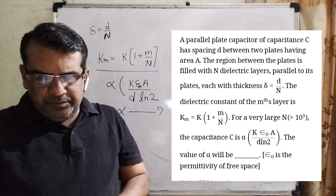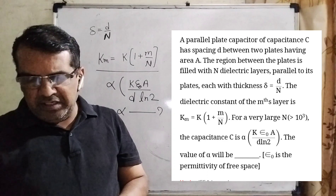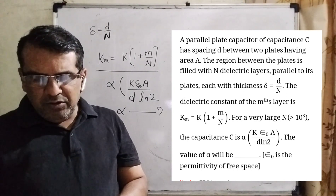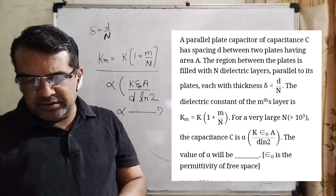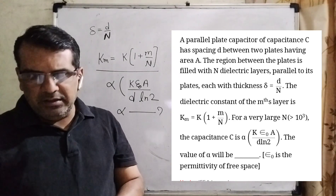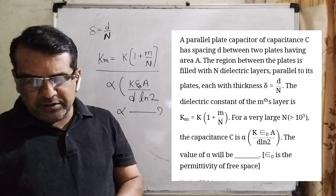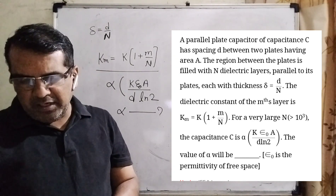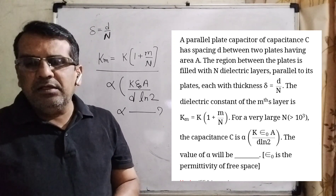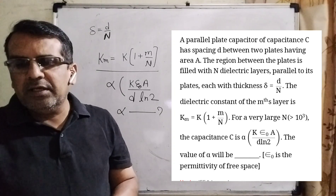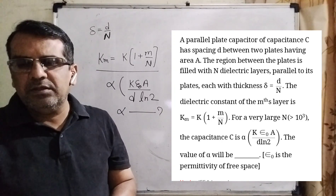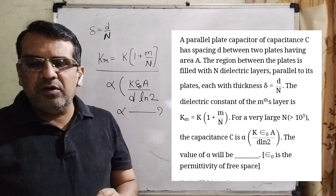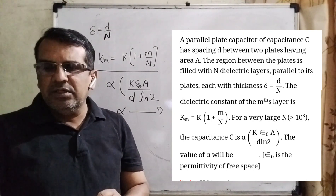Here, what does the question say? A parallel plate capacitor of capacitance C has spacing D between two plates having area A. The region between the plates is filled with N dielectric layers parallel to its plates, each with thickness delta equal to d divided by N. The dielectric constant of the m-th layer is Km equal to K times bracket 1 plus m over N. For a very large N, greater than approximately 10 to the power 3, the capacitance C is alpha times bracket K·ε₀·A divided by D·ln2. The value of alpha is to be found. Here, ε₀ is the permittivity of free space. This question is from JEE Advanced 2019.